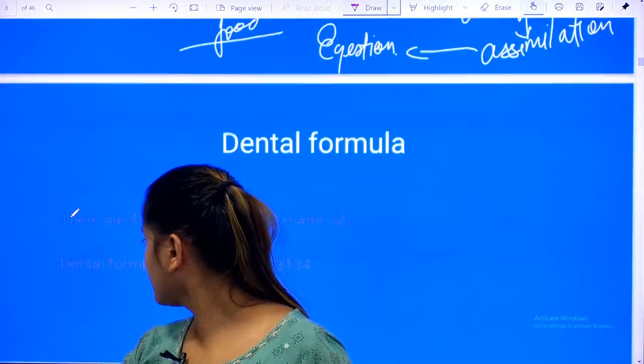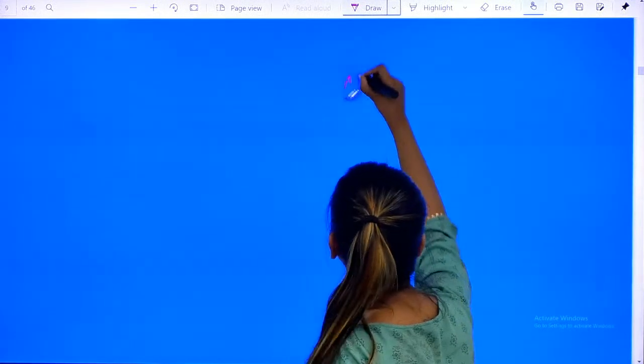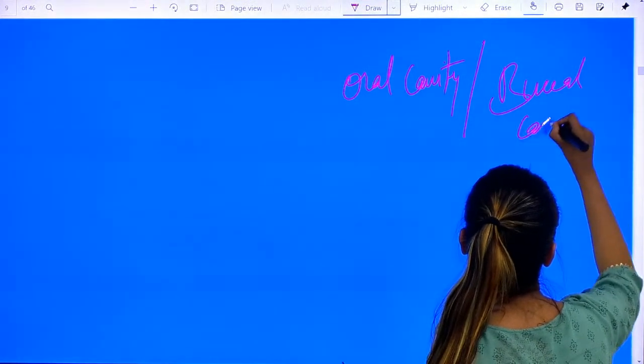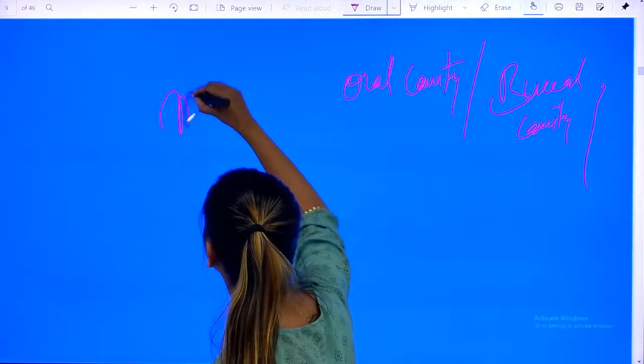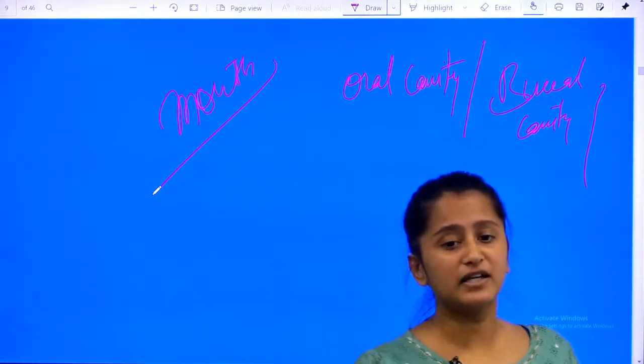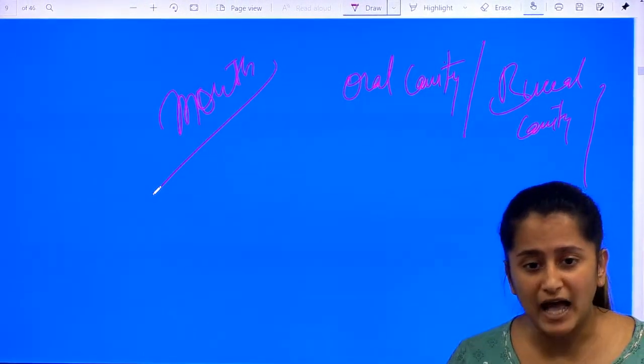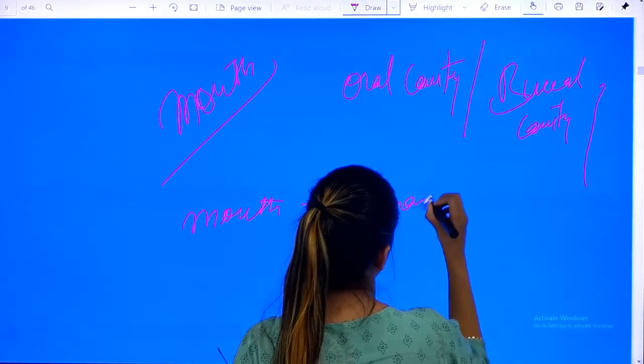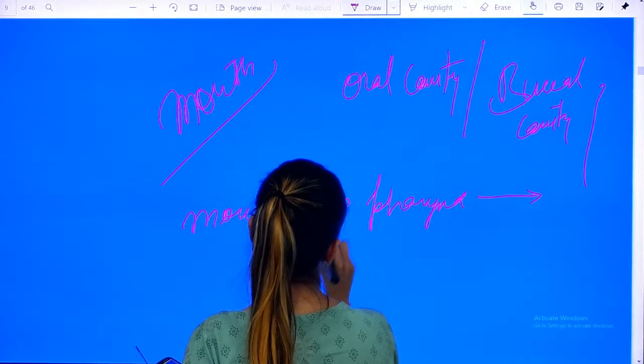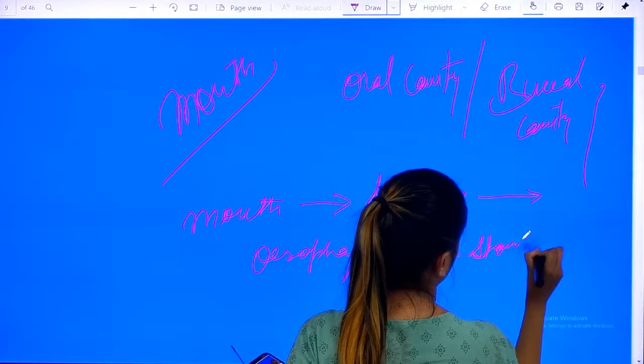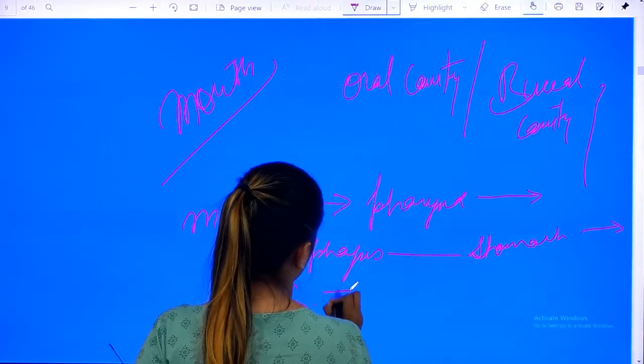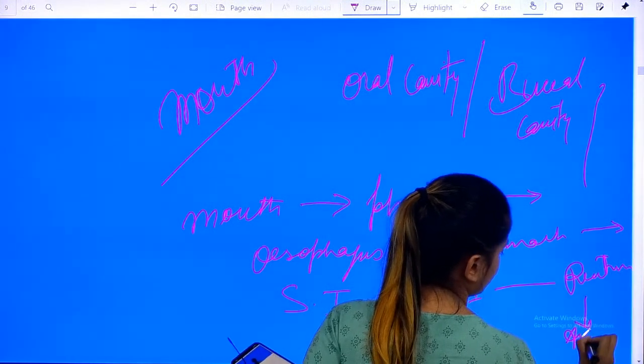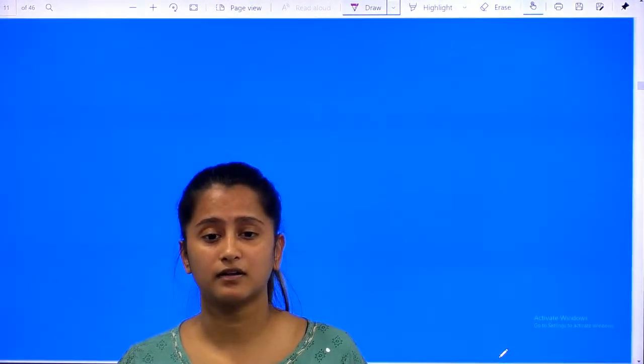We will start with ingestion. How does it start? It starts from oral cavity. The elementary canal is a long tract which starts from mouth to anus. It basically includes your mouth, pharynx, esophagus, stomach, small intestine, large intestine, rectum and anus. This is a long tract.